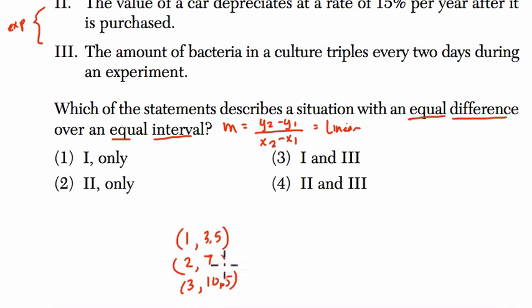So here, if we look at our slope over any interval, let's compare the first two points. It's 7 minus 3.5 over 2 minus 1. And what's that? Well, that's 3.5 over 1. That's our slope. So that's between these two points.